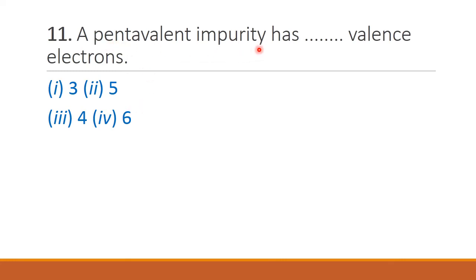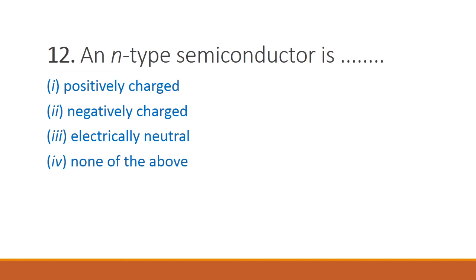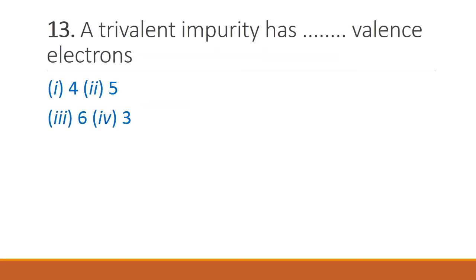Next question: a pentavalent impurity has dash valence electrons. From the name, penta means five, so it has 5 valence electrons. Therefore option 2 is the right answer. Next question: an N-type semiconductor is — positively charged, negatively charged, electrically neutral, or none of the above. It has both positive and negative charges, so it is electrically neutral. Therefore option 3 is the right answer. Next: a trivalent impurity has dash valence electrons — trivalent means 3 valence electrons, so option 4 is the right answer.